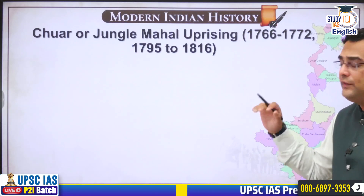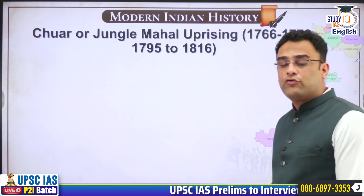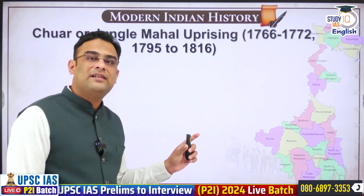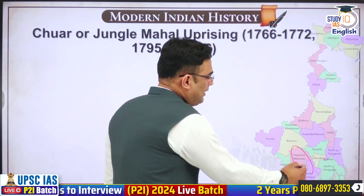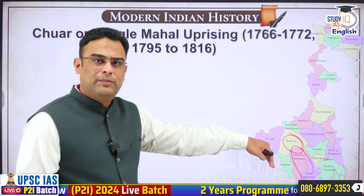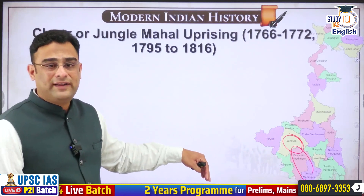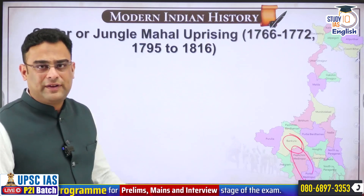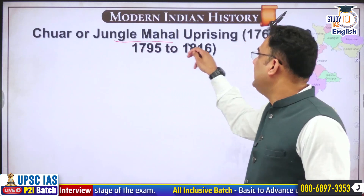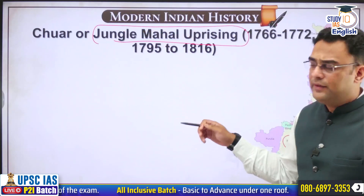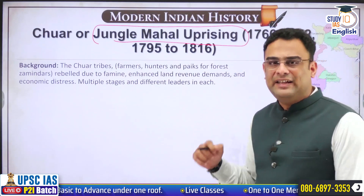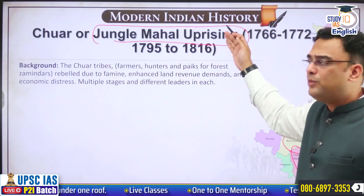Let us now start with the first revolt — the Chuar or Jangal Mahal Uprising. This Jangal Mahal was a district that the Britishers had created, which included the areas of Midnapur and Bankura, bordering Jharkhand. Back then they had the Diwani rights of Bengal, Bihar and Orissa, and consequently they had created the Jangal Mahal district, which as the name suggests had a lot of forested areas. It is here that one of the very first tribal revolts took place, called the Jangal Mahal Uprising — also called Chuar Uprising, though textbooks tell us that 'Chuar' was used as a slang to humiliate and demean the tribals.